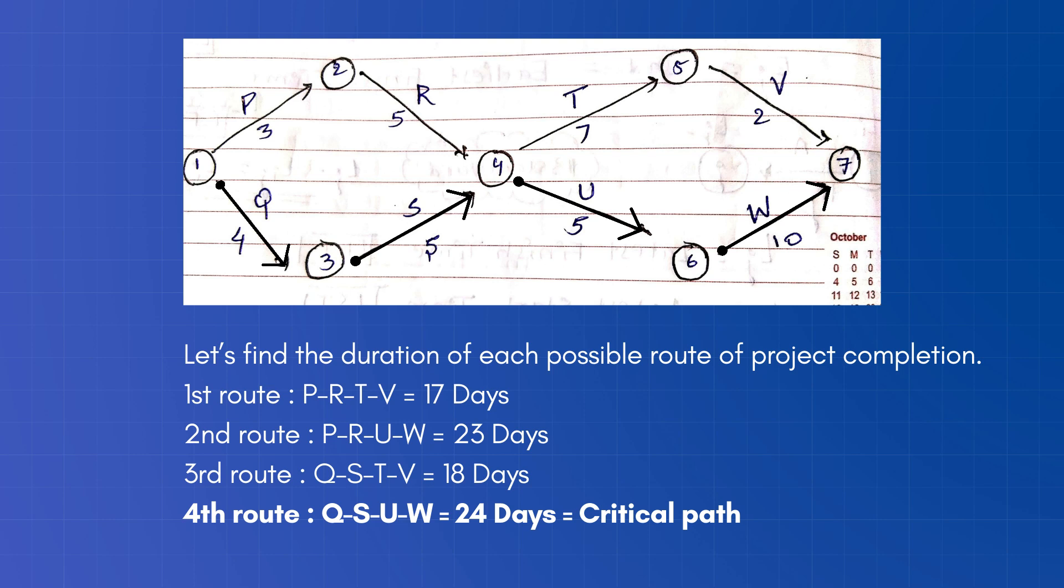And the fourth route would be Q, S, U, W. Here, 4 plus 5 plus 5 plus 10 would be 24 days. So this is the maximum time any route is taking, so this would be the critical path.